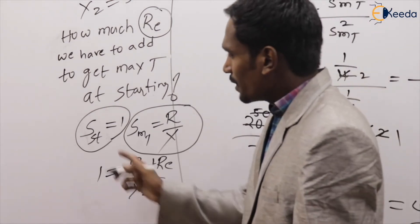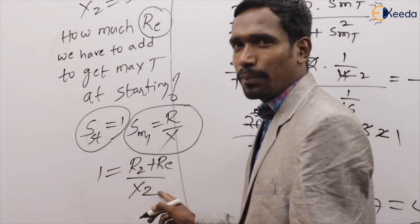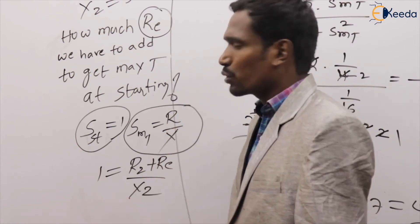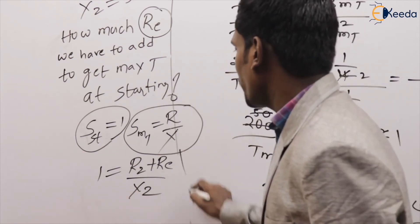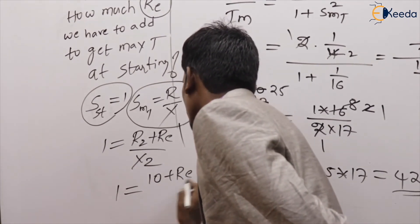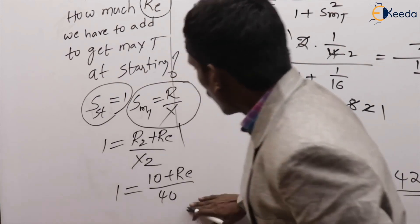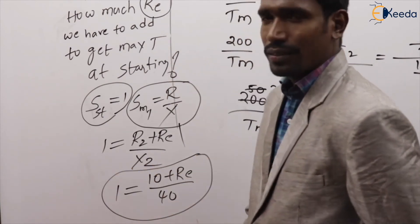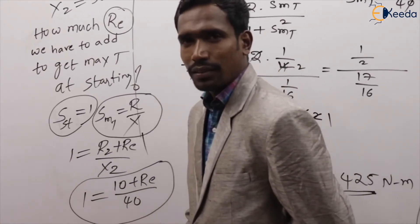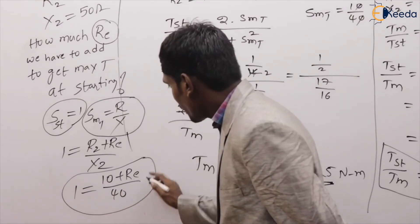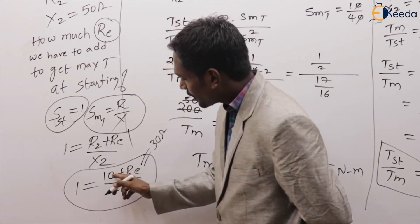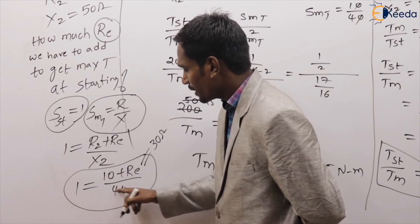So 1 = (10 + R_E) / 40. Solving: R_E = 30 ohms. With R_E = 30 ohms: (10 + 30)/40 = 40/40 = 1. Correct.